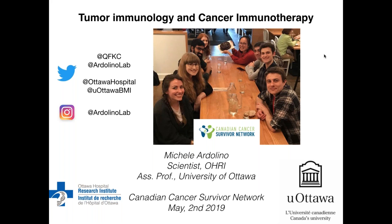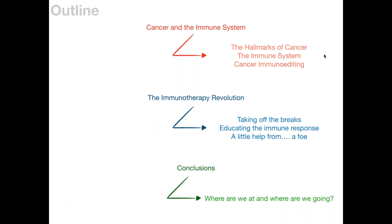We're trying to develop a better understanding of the immune system and how it is able to fight cancer, with the idea that broader knowledge of these mechanisms will lead to therapeutic possibilities. This is an outline of my seminar: I'm going to discuss basic concepts of cancer and the immune system, then the immunotherapy evolution — this new therapeutic approach — and finally some concluding slides and questions.